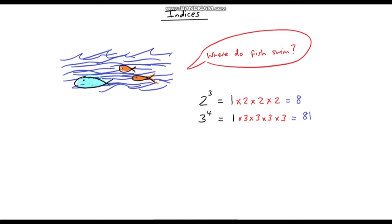Let's do a few more examples. Let's say we've got 7 to the power of 1. Well, again we always start with 1, and this time we're going to multiply by 7 — but we're only going to do that once. So it's just 1 times 7, which is 7.